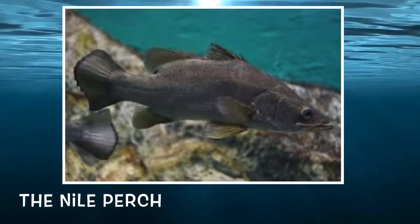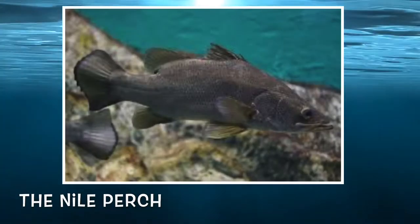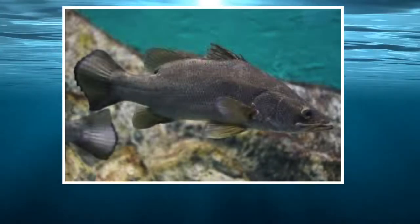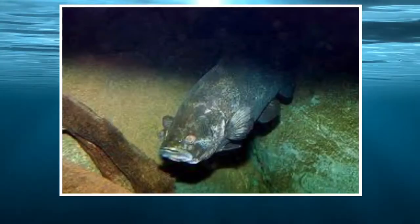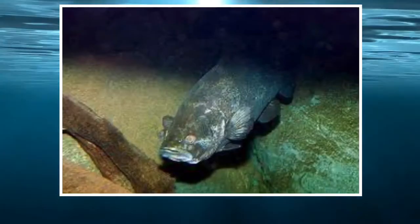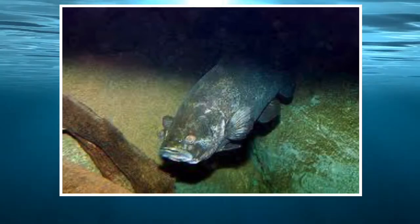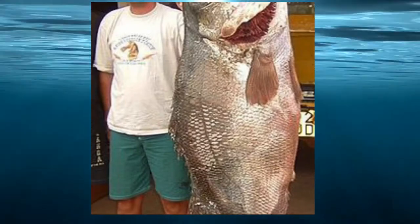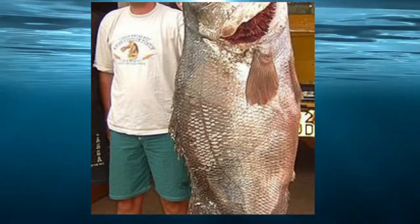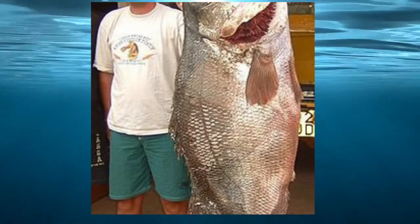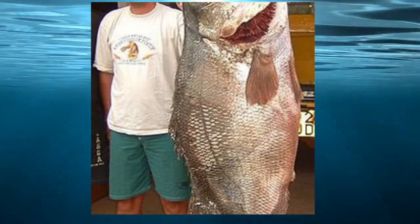This one here is the Nile Perch. The Nile Perch was introduced to Lake Victoria in Africa in 1954, where it ended up destroying 200 native species of fish through predation and competition for food. We also introduced them here in Texas in 1975, but so far the species is still controlled. Look at the size of that thing.